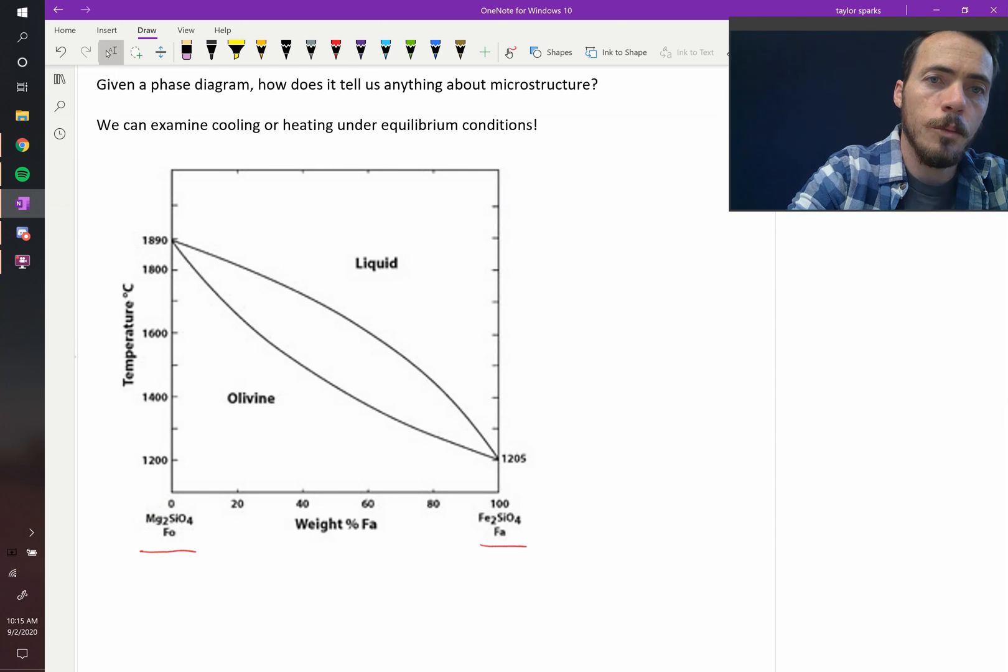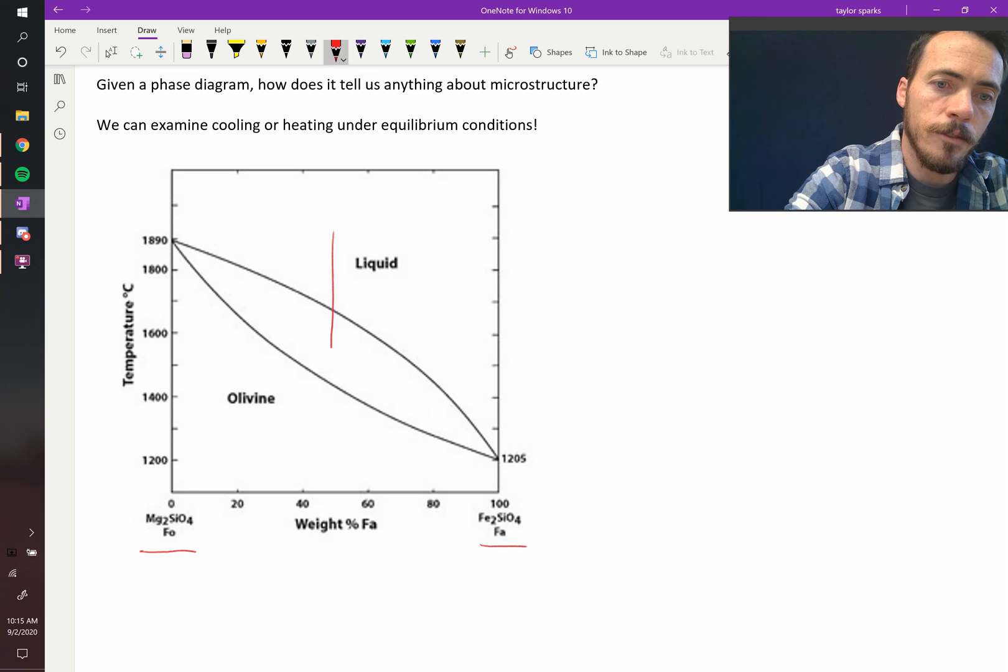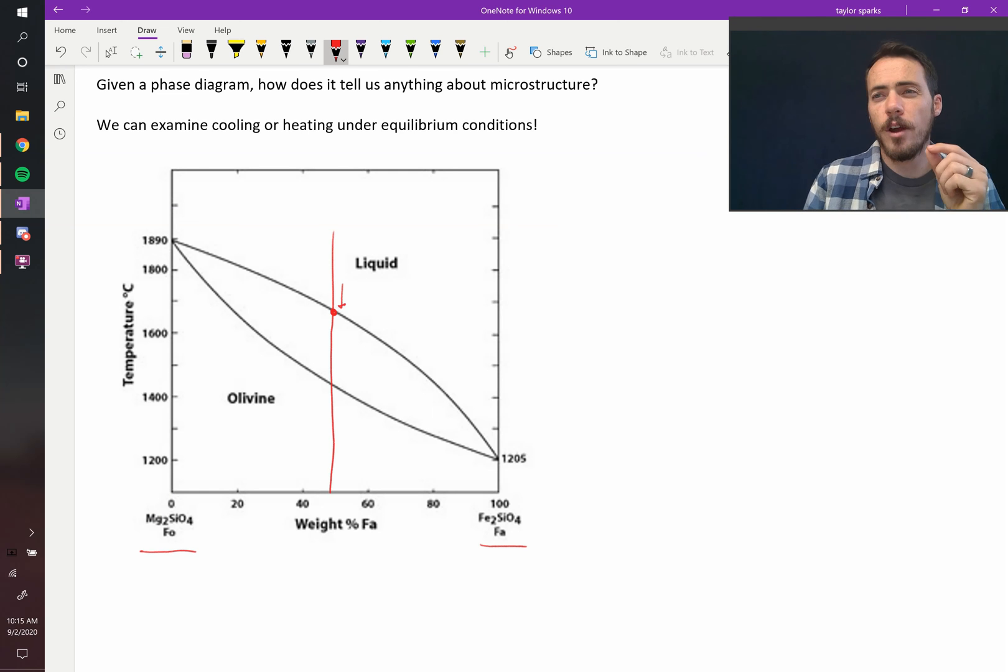Now if we pick a composition and we start to cool it down, let's say we cool down right here in the middle at 50-50. We know that right at this point, as you first cool down to right there, the very first solid starts to form. And we know that the phase diagram can tell us compositions. We've done that.